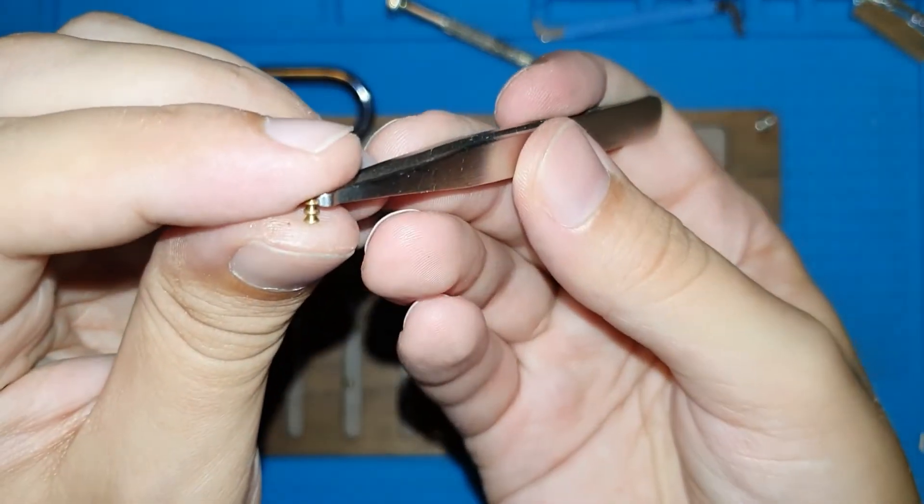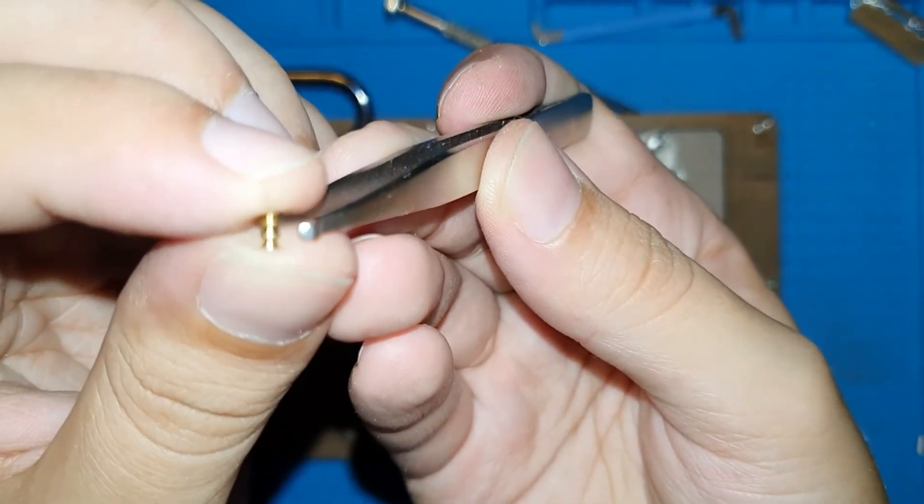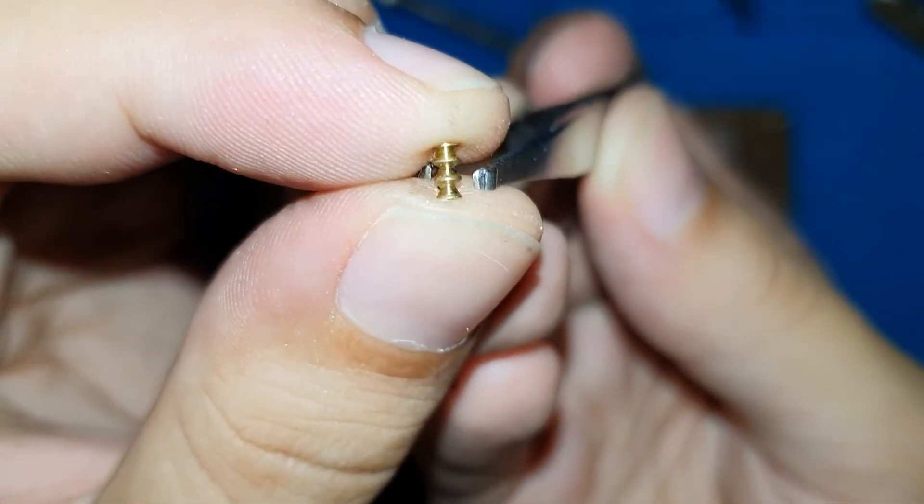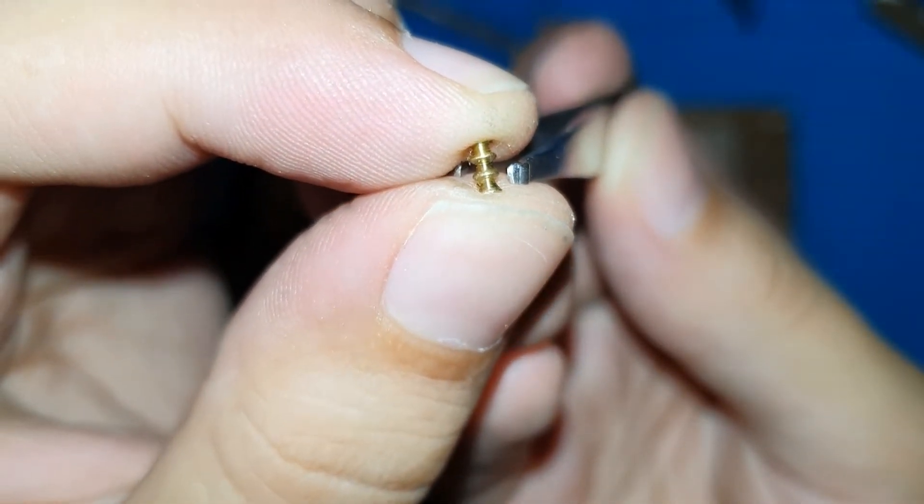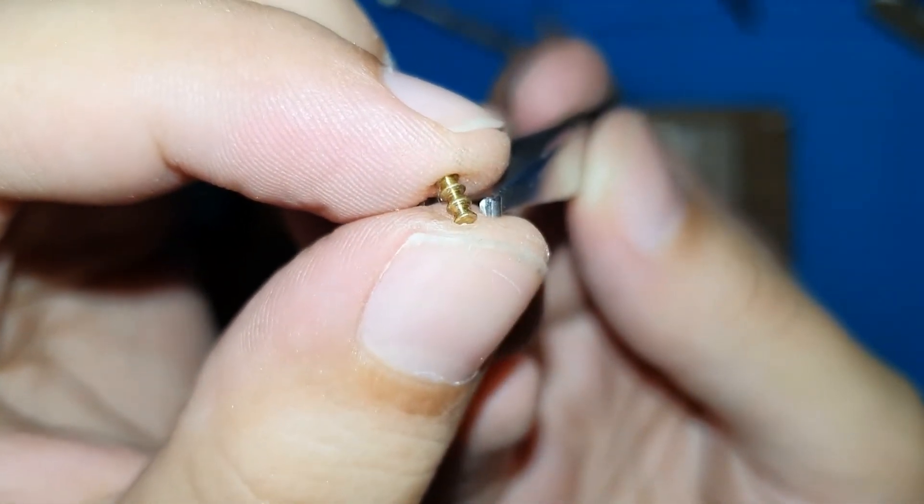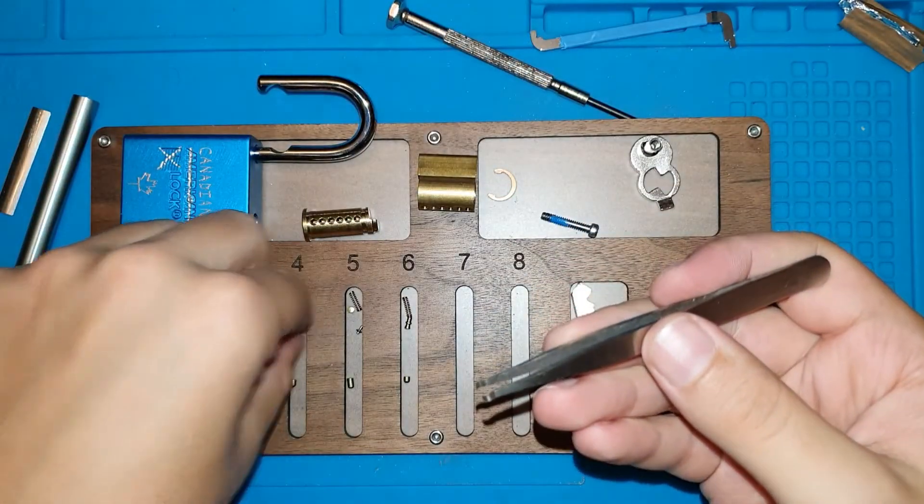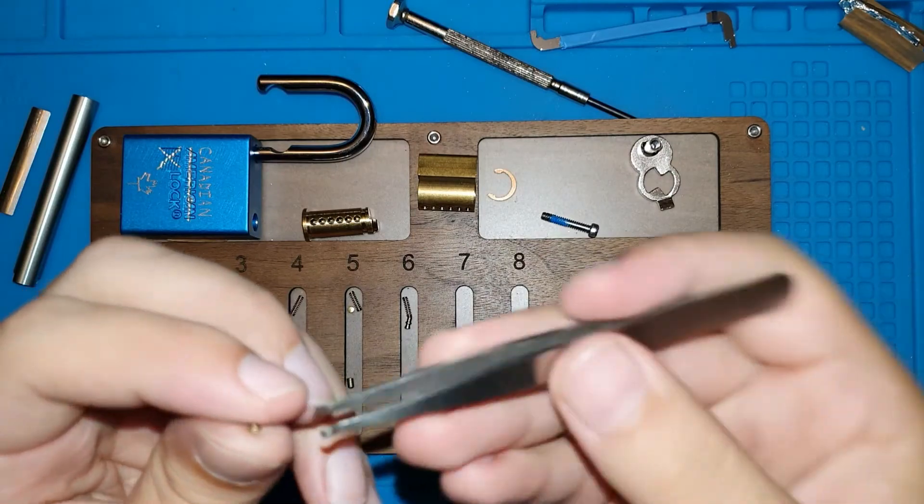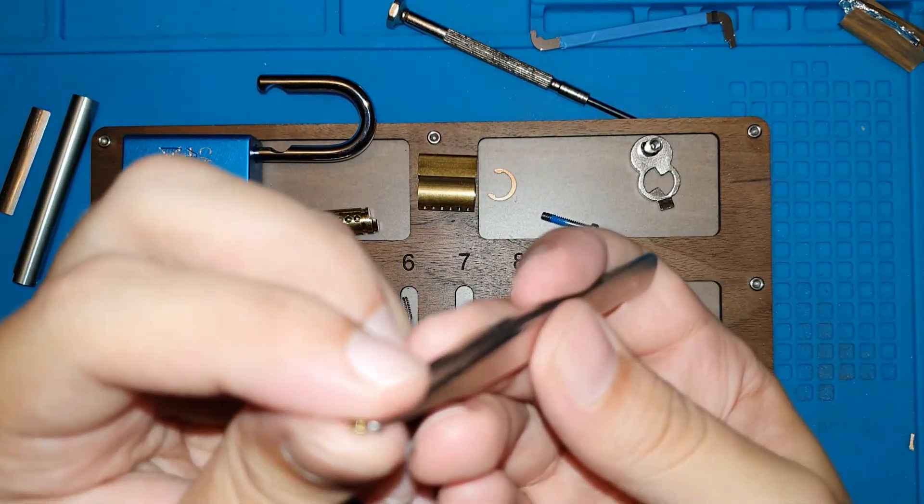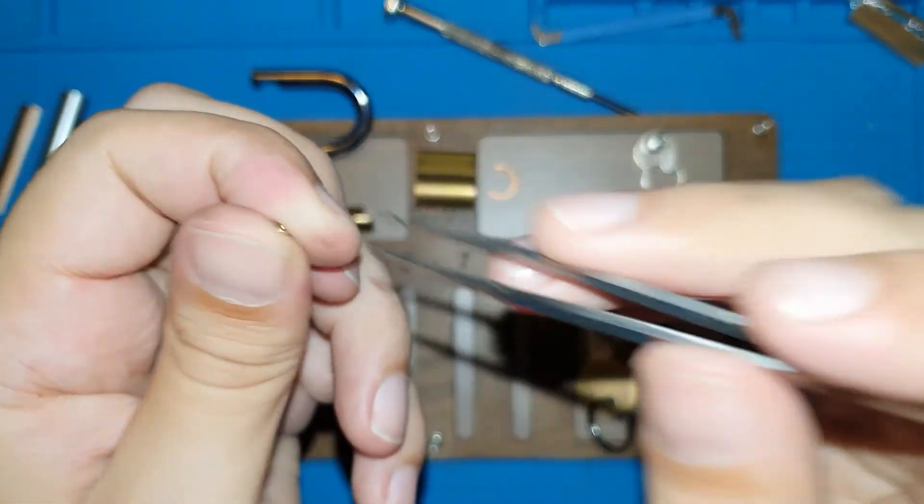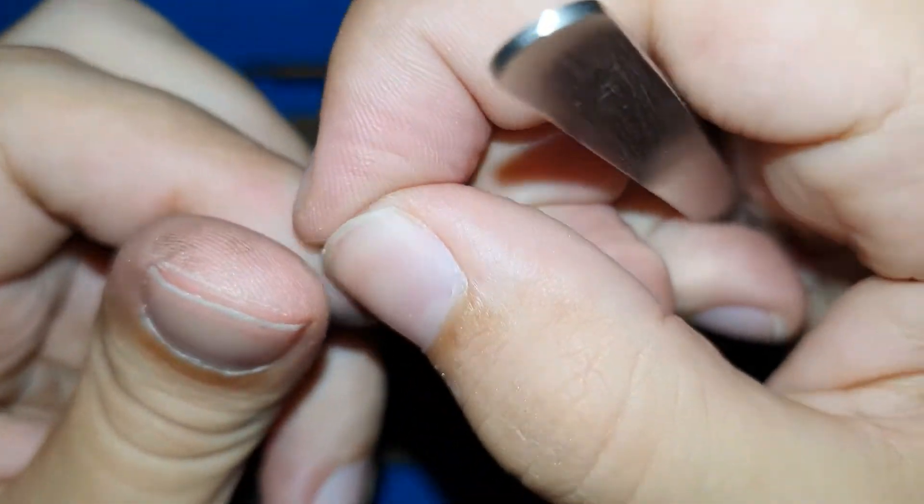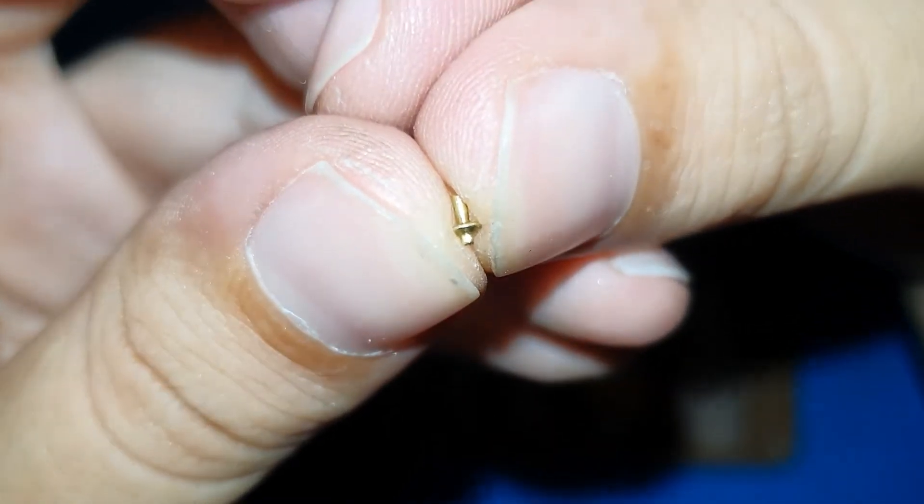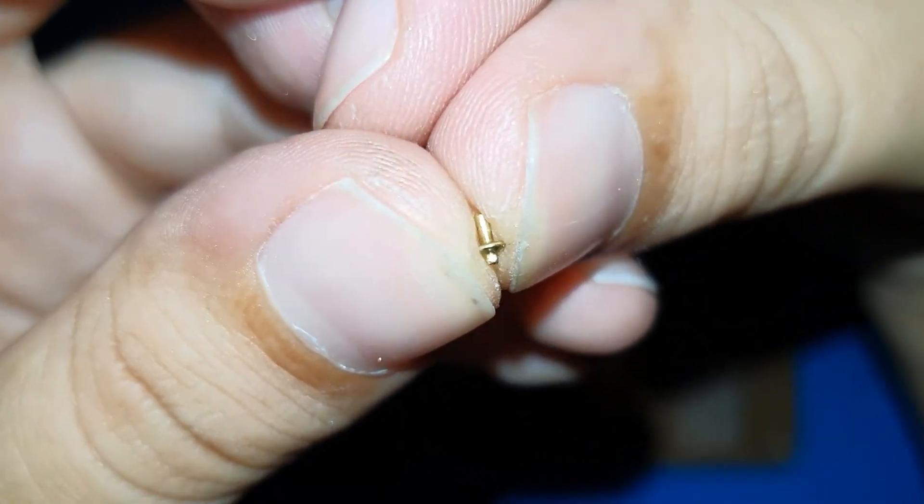Now, this is another of those double spools. This one looks a bit deeper. And another one of those sort of T-pins. Cool.